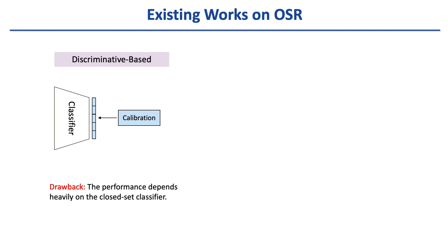To solve the open set model attribution problem, an intuitive way is to adopt existing open set recognition methods. These works may follow a discriminative or generative line. From the discriminative line, the typical routine is to first train a closed set classifier and then calibrate the confidence to a reasonable distribution. However, the performance heavily depends on the closed set classifier, and the learned feature space is not rectified for the open set samples.